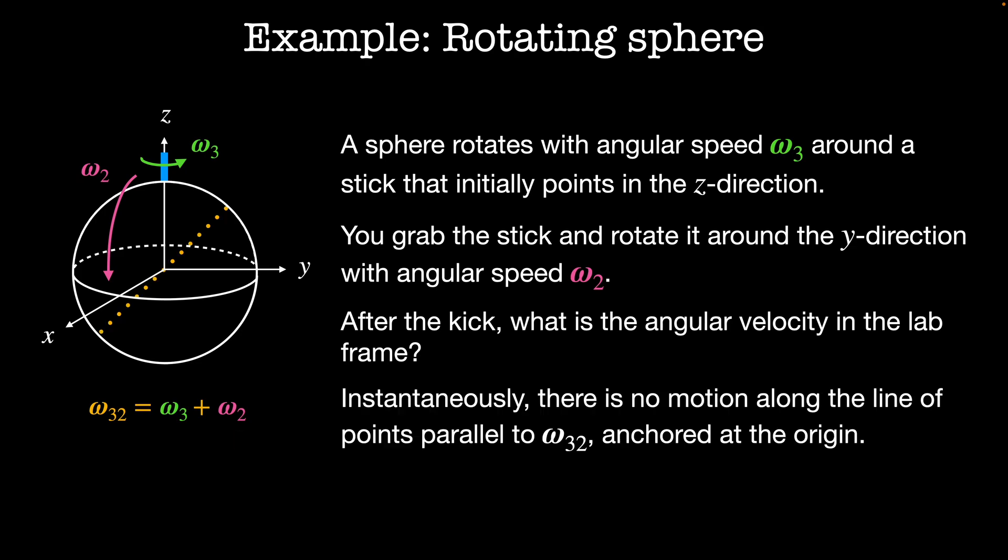This means that there's no motion of the points in the sphere along this line here. As the rotation continues, vector omega 3 will change directions. The net rotation will still be omega 32 equals omega 3 plus omega 2, but since omega 3 is constantly changing, there won't be a single fixed line of points throughout the whole motion.